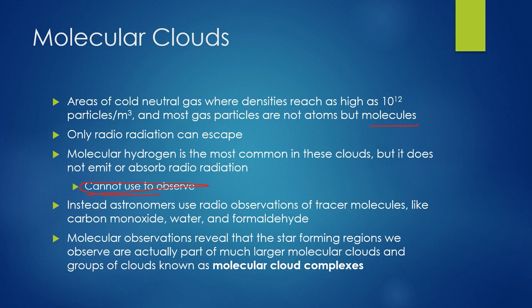Molecular observations reveal that the star-forming regions we observe are actually part of a much larger molecular cloud, and groups of clouds are known as molecular cloud complexes. Molecular clouds become bright emission nebulae when the radiation from new stars heats and ionizes the cold molecular gas. We know about 1,000 molecular cloud complexes that have formed in our galaxy. The density of these clouds protects the molecules from the harsh environment of space — the same absorption that prevents high-frequency radiation from getting to us also prevents it from destroying these molecules. Dust grains in the clouds provide starting points for molecule formation.